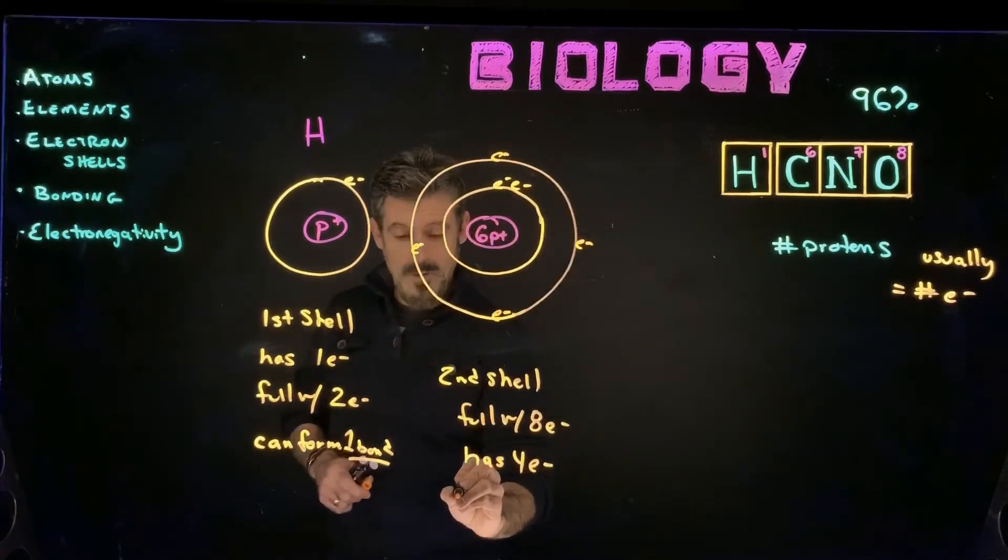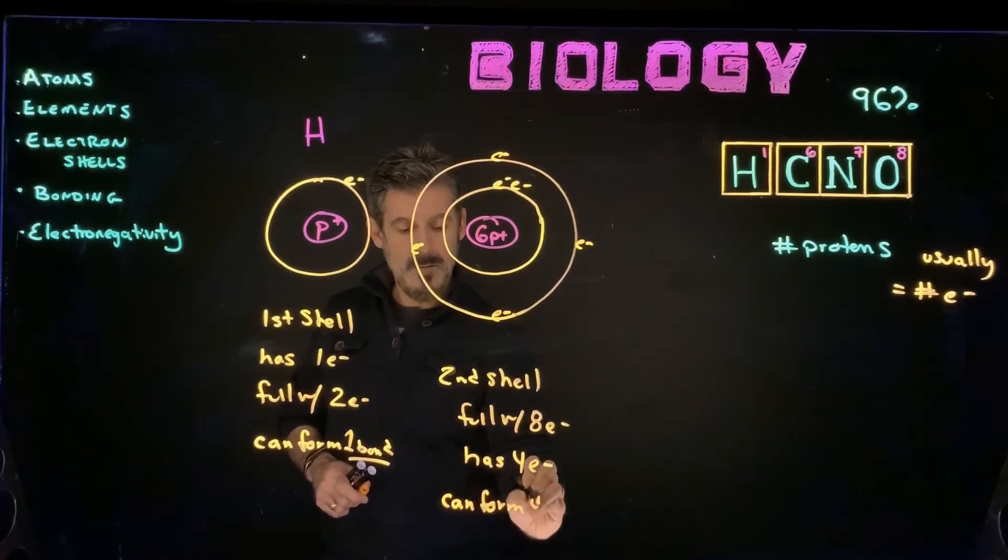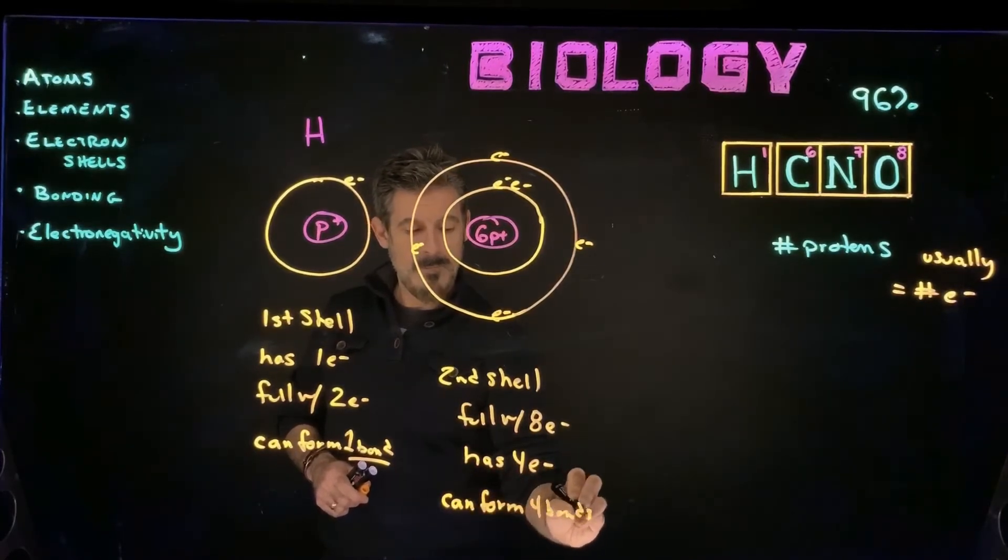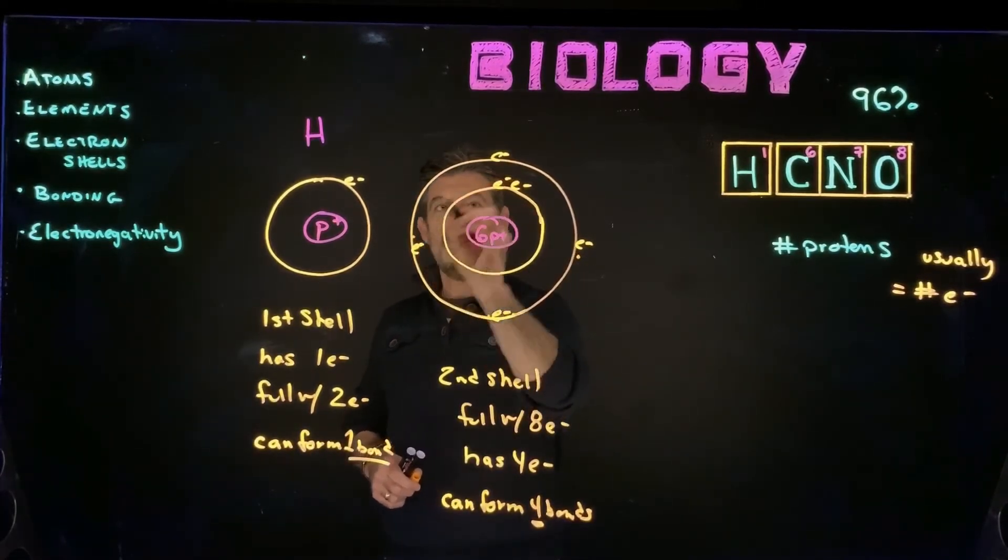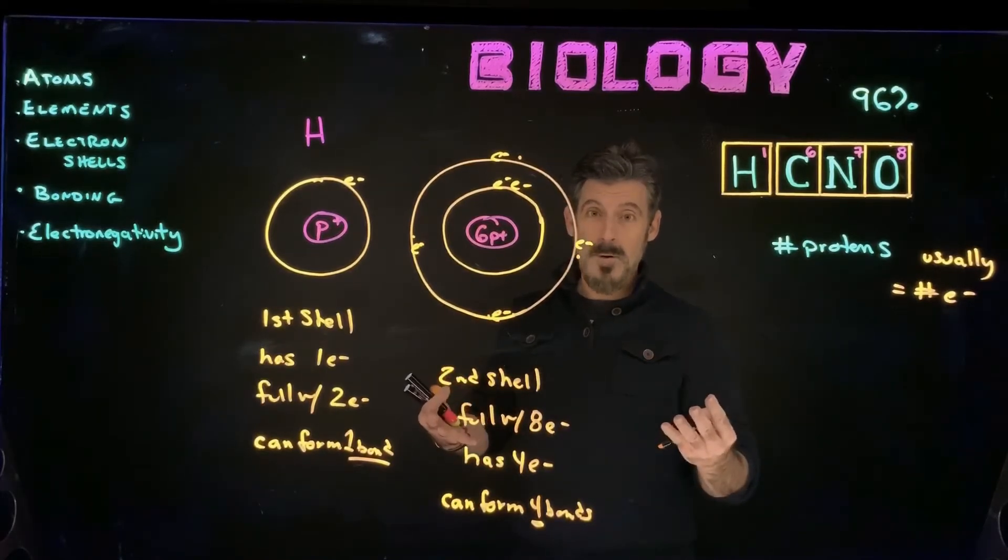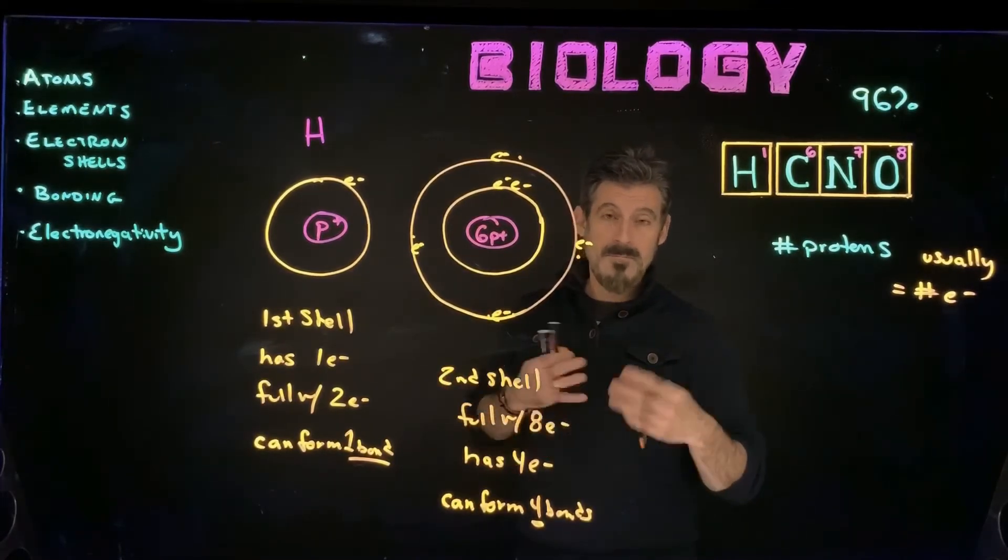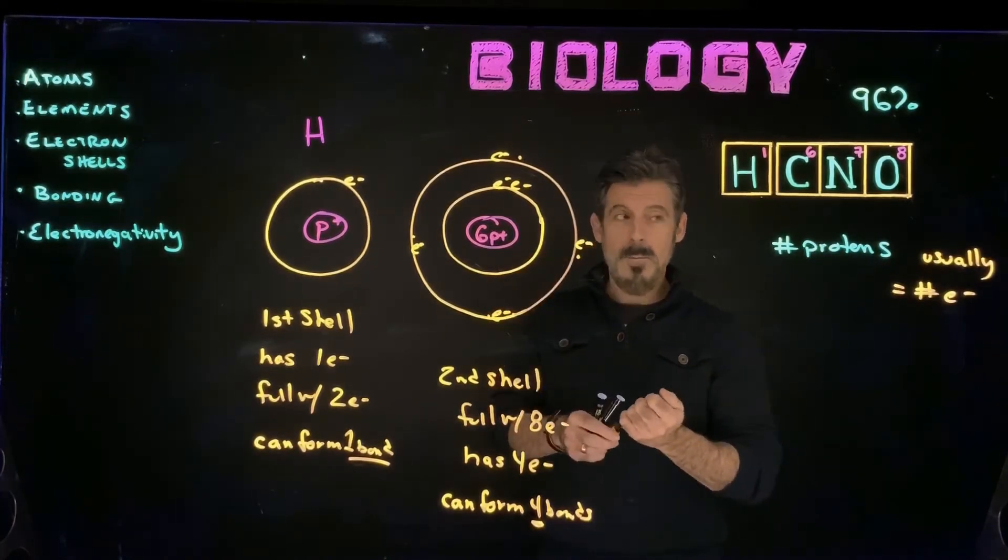Now it needs four more, so it can form four bonds. Because you can get one, two, three, four more electrons to fill out that shell, so it can form four bonds, and it will form four bonds. It's not going to form just three or two or five. It's going to form four bonds.